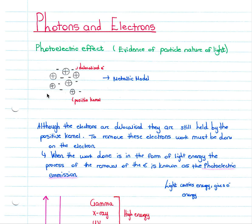Firstly, we need to understand the metallic model. We have positive kernels — metal kernels — which are surrounded by a sea of delocalized electrons, indicated by our negative charges and our positive kernels. Although the electrons are delocalized, they are still held by the positive kernels. The electrons float around as they are attracted by different positive kernels at different points in time, and that causes them to become delocalized in your metallic model.